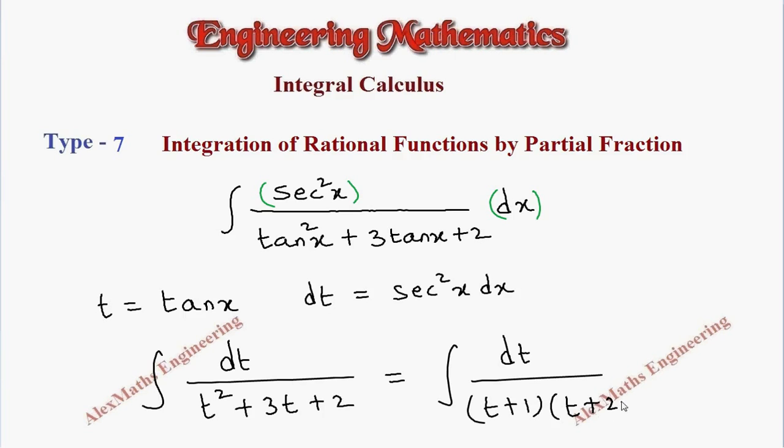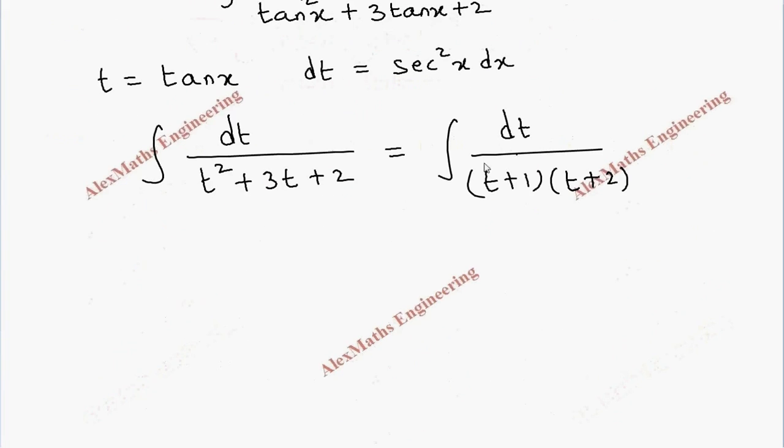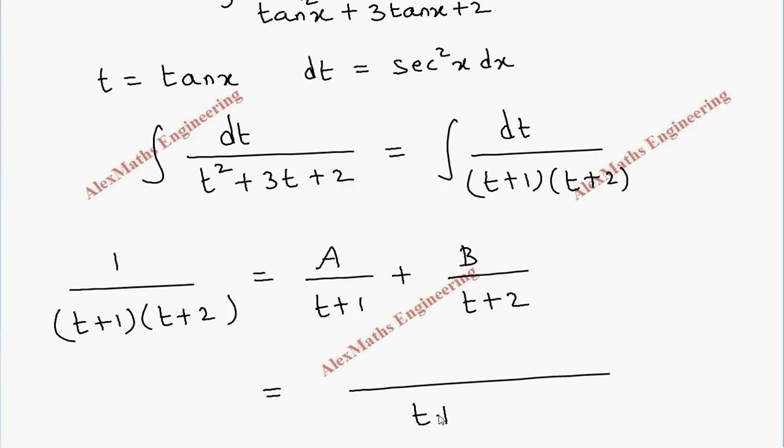Now let's take the expression alone: 1 by t plus 1 into t plus 2. Then the partial fraction rule: A by first factor plus B by second factor. So we take LCM, it will be t plus 1 into t plus 2.